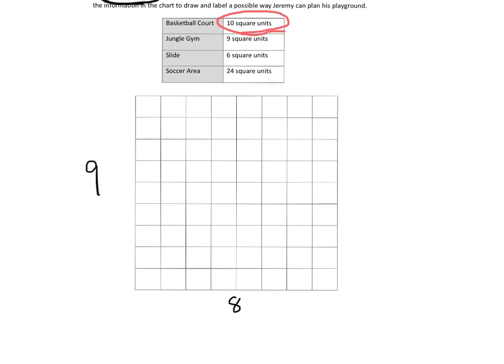So let's start with the basketball court. It's 10 square units. Let's just put it up here. Here's my basketball, and I can see that it's 10 units because I can count 1, 2, 3, 4, 5, 6, 7, 8, 9, 10. Or another way is because it's 2 by 5. And there's my basketball court. So I'm going to call that B.C.